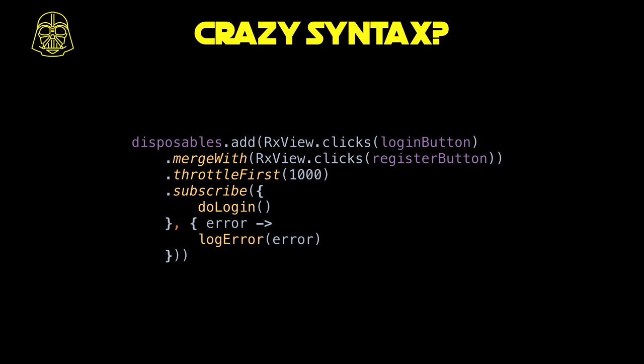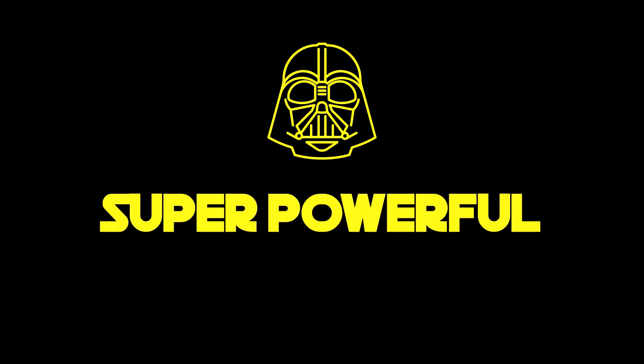This is an example of an RxJava chain. If you're used to RxJava, you look at this and it makes sense fairly quickly. If you're not used to RxJava, there's a lot of questions here. What is merging with what exactly? What are we throttling? Where is the error? When does this error get logged? Yeah, it's a bit confusing.